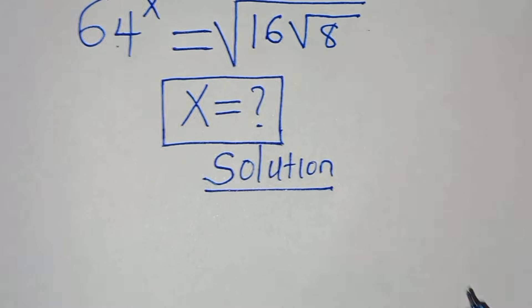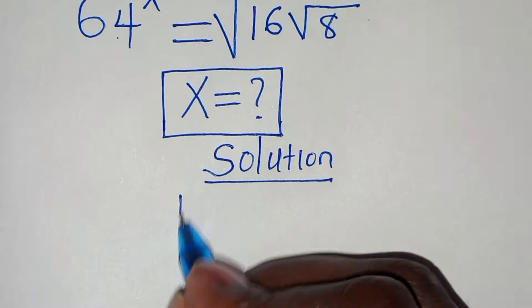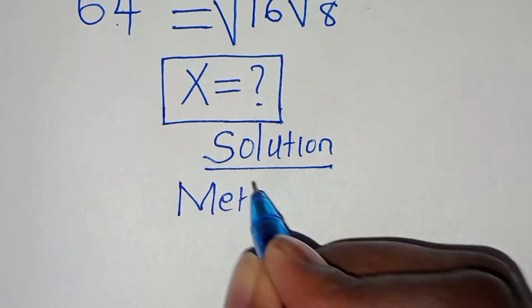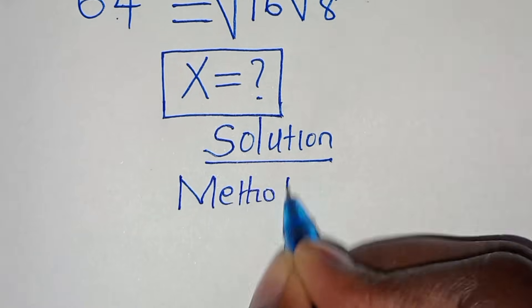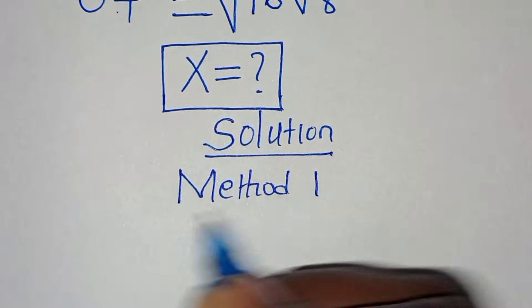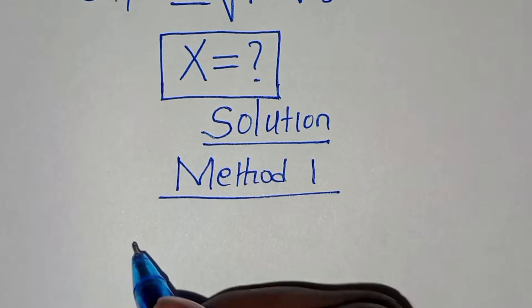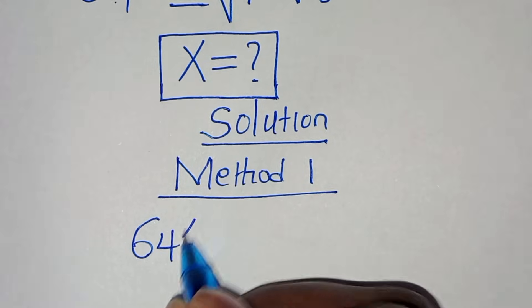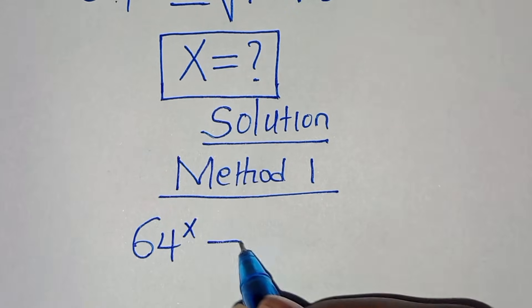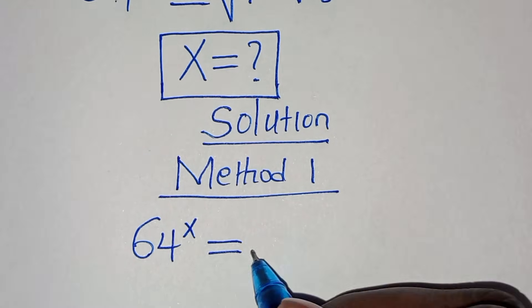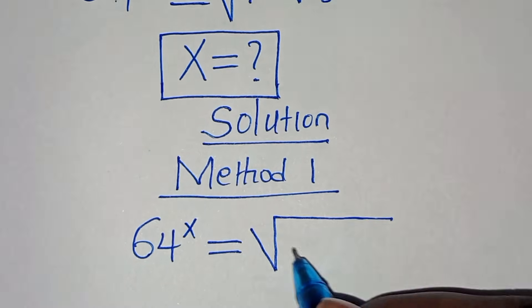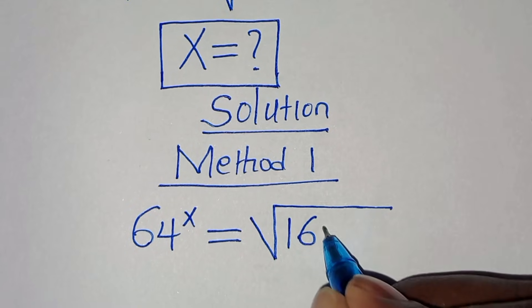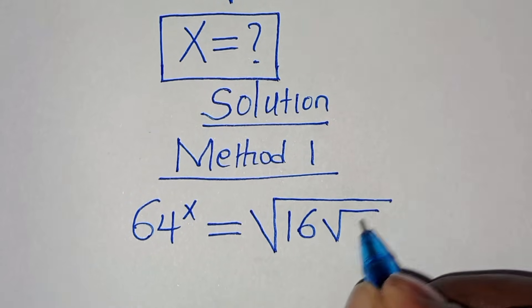We are going to solve this by applying two methods. Let's start with Method 1. In Method 1, we have 64 to the power of x equal to square root of 16 times square root of 8.